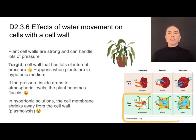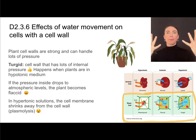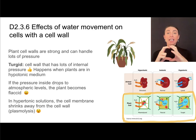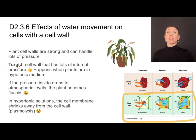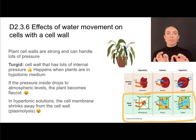Plant cell walls are made of cellulose, are very strong, and can handle lots of pressure — that pressure helps plants stand upright. Plants don't have a skeleton; they rely on turgidity inside their cells to remain upright. A turgid cell has a lot of internal pressure coming from water, which occurs when a plant cell is in a hypotonic medium driving water into the cell. The cell wall prevents it from bursting.